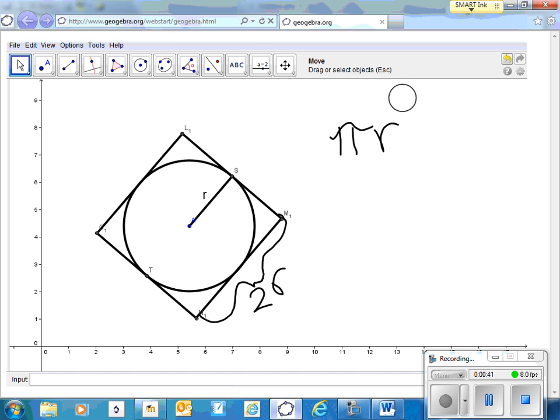And if we look at the volume of the square it would be two R times two R or two R quantity squared.